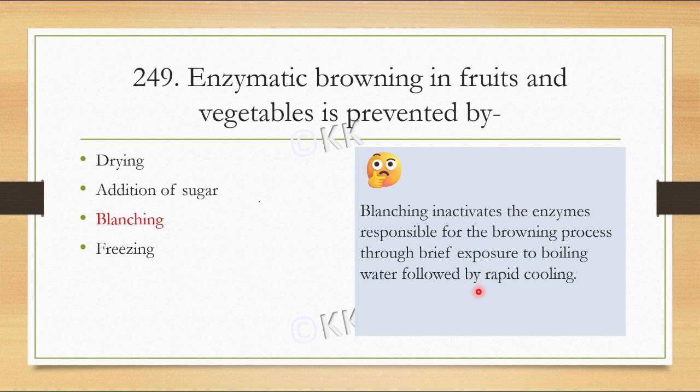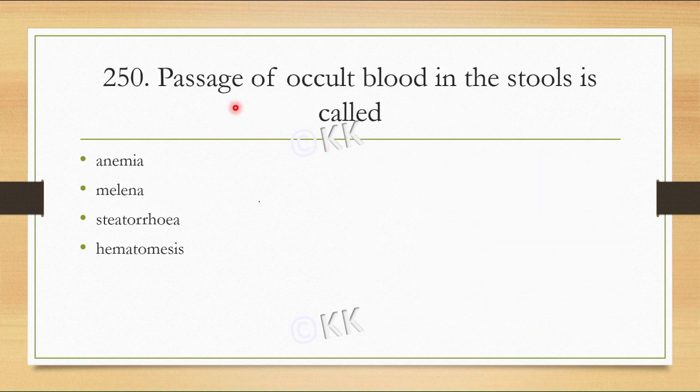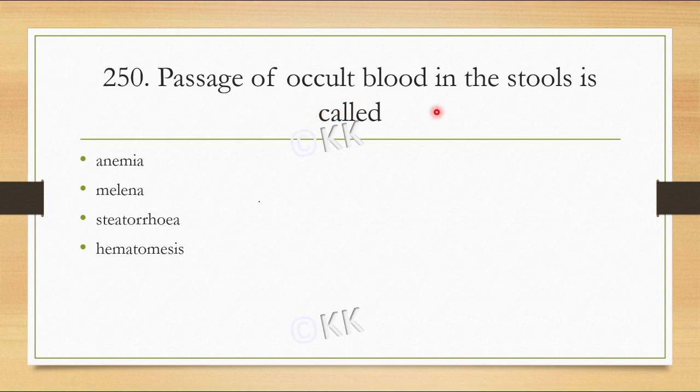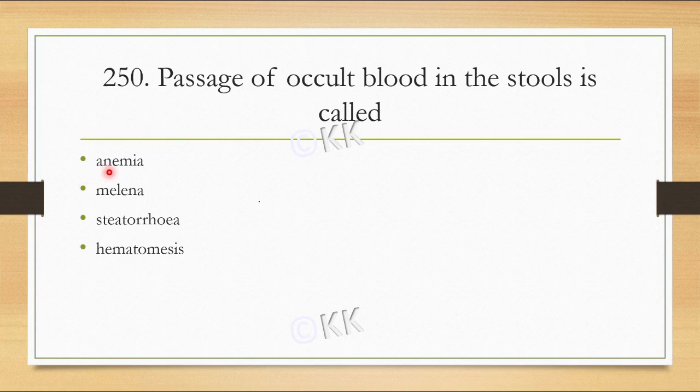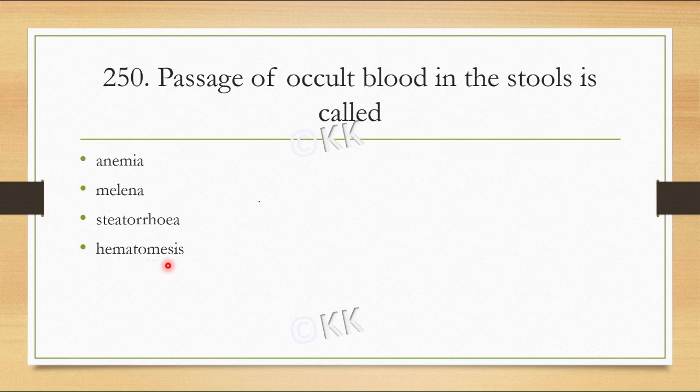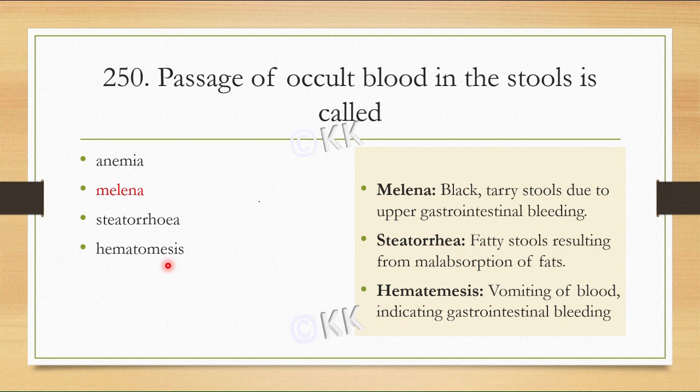Passage of occult blood in the stools is called: option A anemia, option B melena, option C steatorrhea, option D hematemesis. The correct option is B, melena.